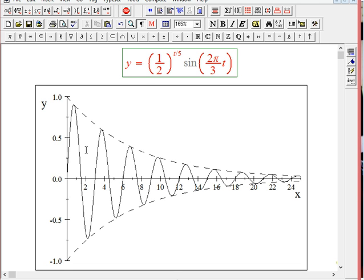Then the actual graph I'm putting in with the combination of the varying amplitude and the sine wave. So that's a classic example of damped harmonic motion.